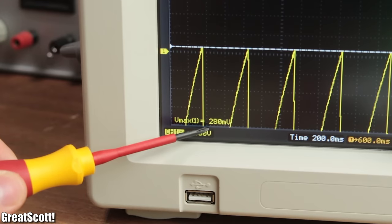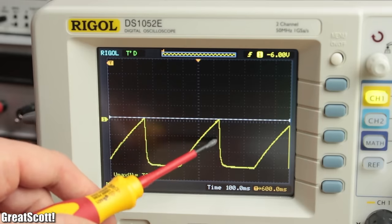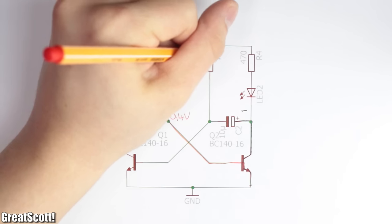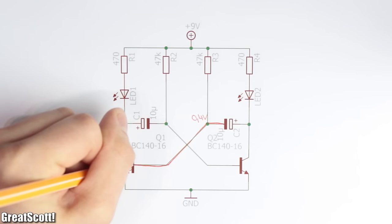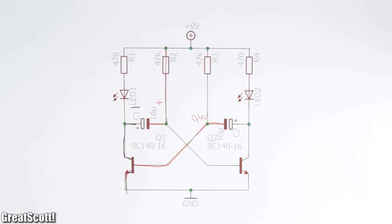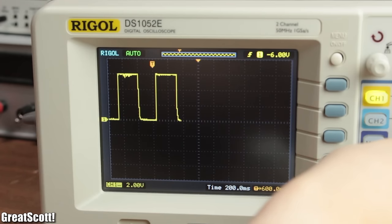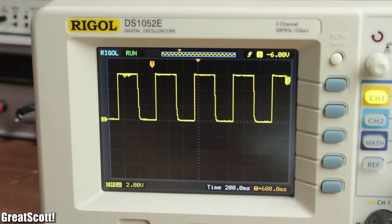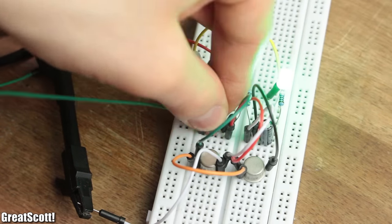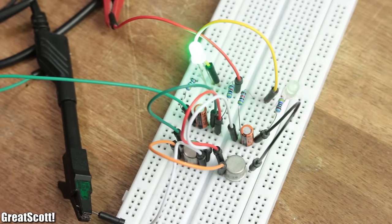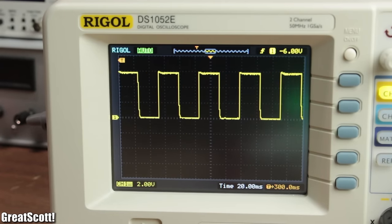This way the transistor becomes conductive and discharges capacitor C1 while the other one C2 gets charged. Once C2 then reaches the threshold voltage, the cycle repeats with the other transistor and we successfully have created a rectangle waveform which is visualized by the LEDs. If you would decrease the resistance or capacitance, the charging and discharging process would get shorter and the frequency of the rectangle wave increases.